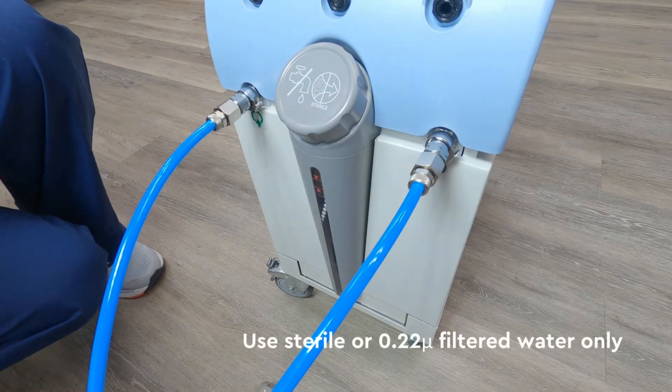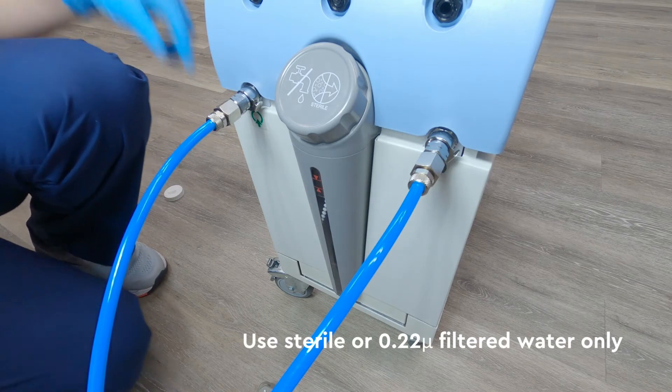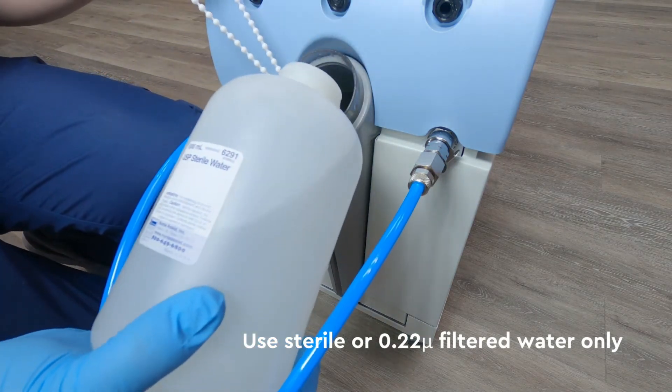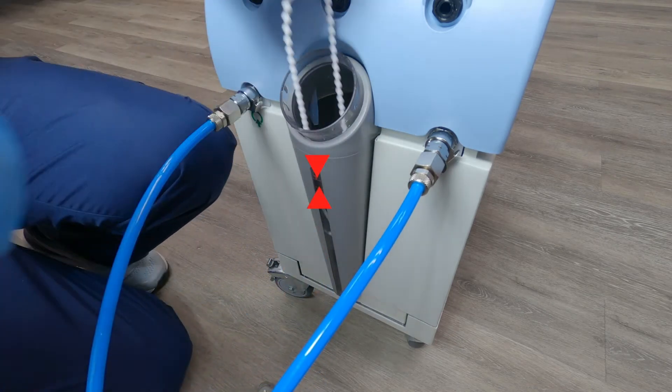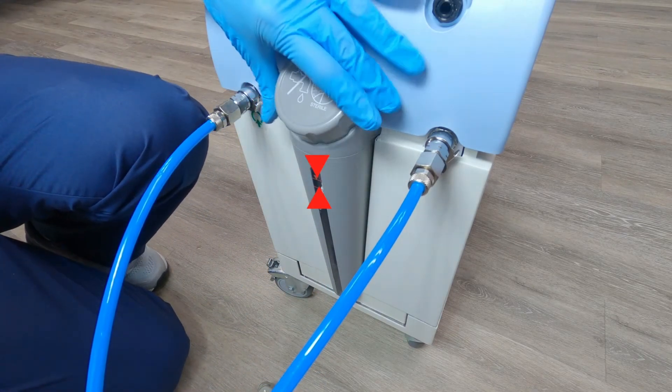Using only sterile or 0.22 micron filtered water, remove the gray cap and fill the water tank. Make sure the water line falls in between the two red lines. A full tank has six liters of water.